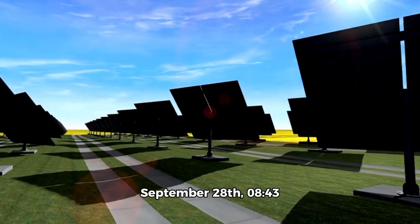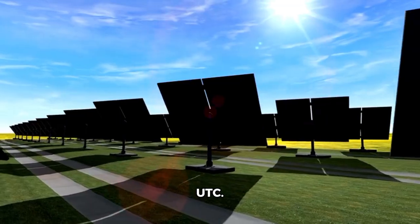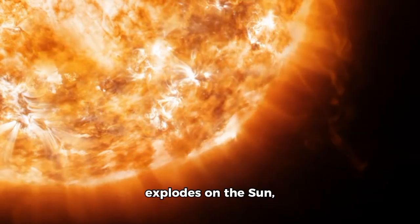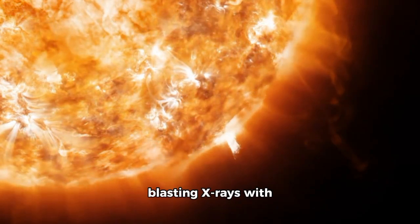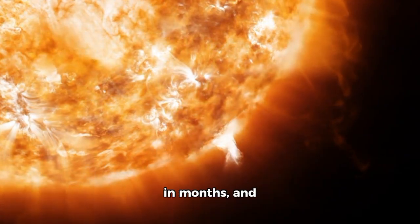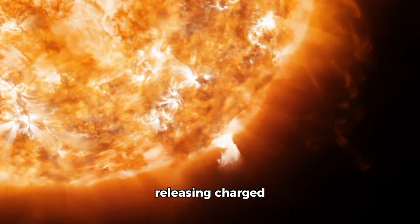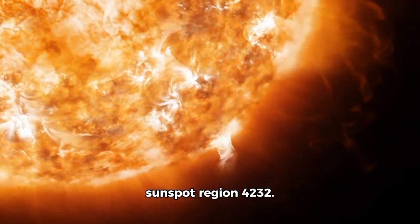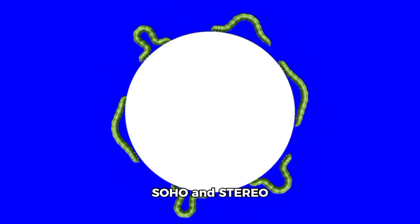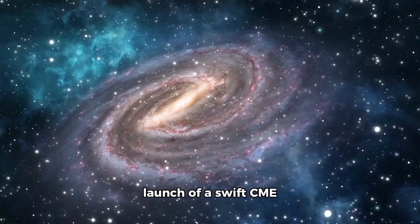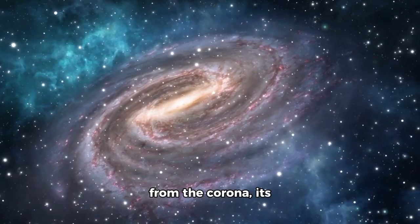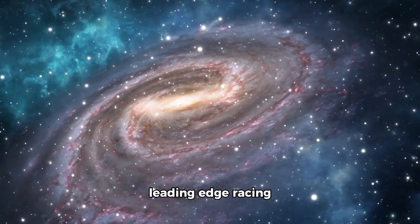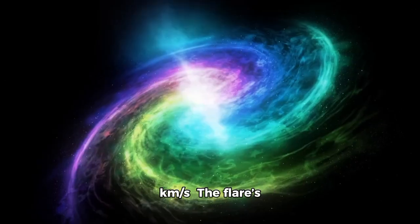September 28, 8:43 UTC. An M6.4-class flare exploded on the sun, blasting X-rays with its strongest power in months and releasing charged particles from sunspot region AR 3232. Within minutes, coronagraphs onboard SOHO and STEREO satellites confirmed the launch of a swift CME from the corona, its leading edge racing outward at 800 to 1,000 kilometers per second.